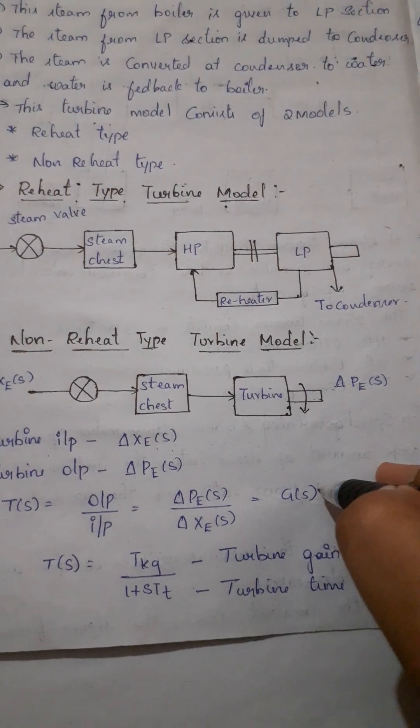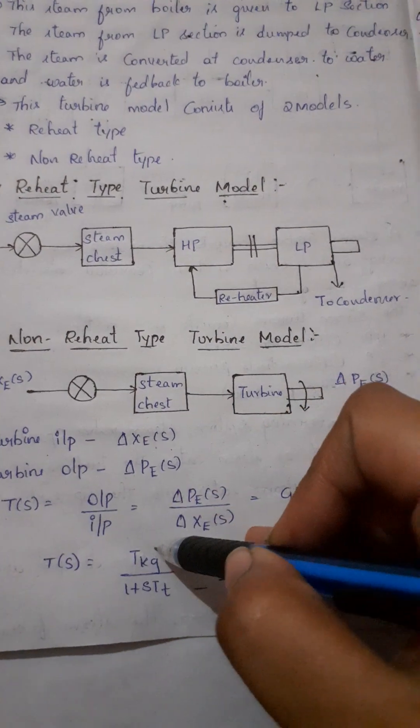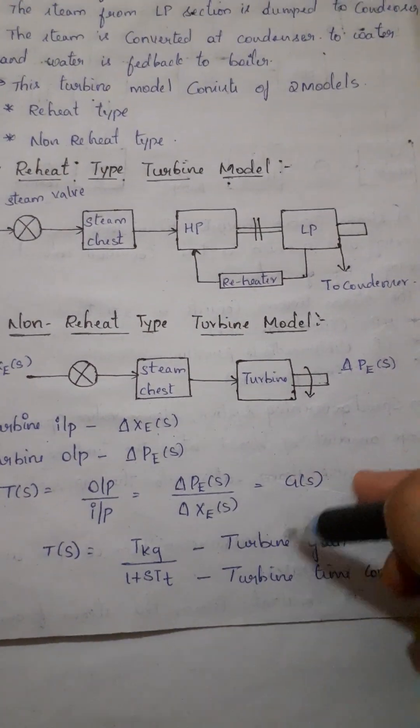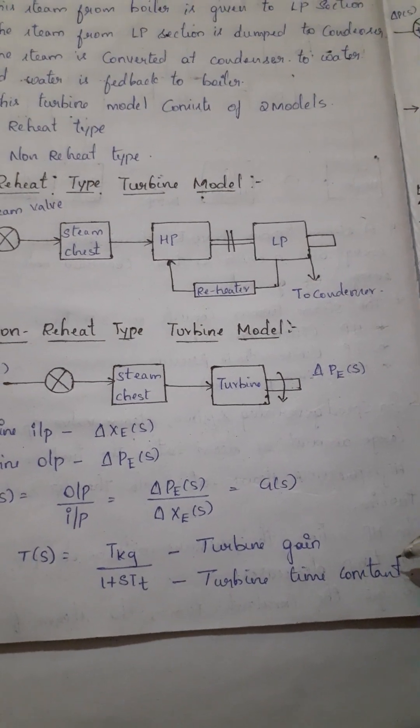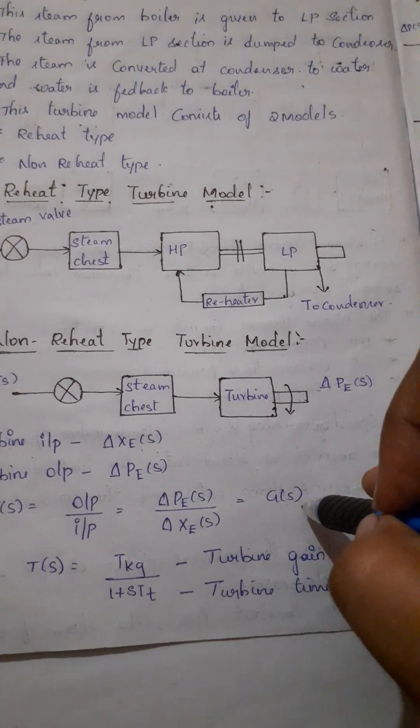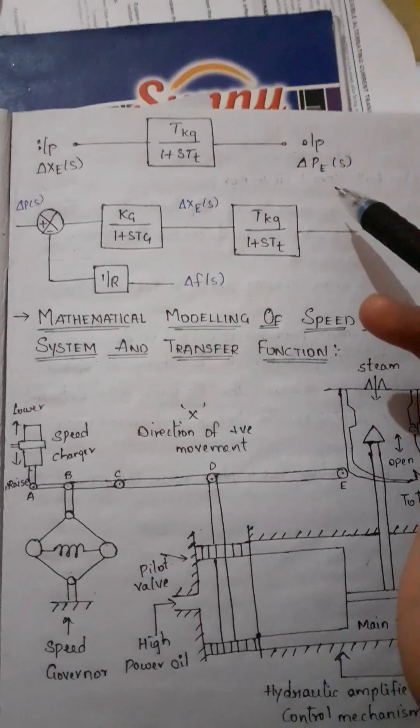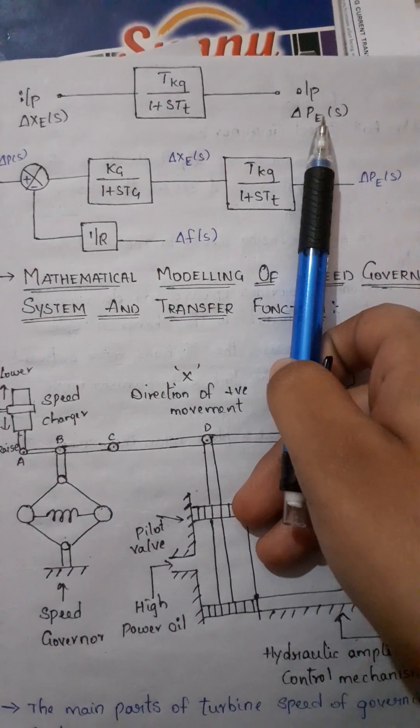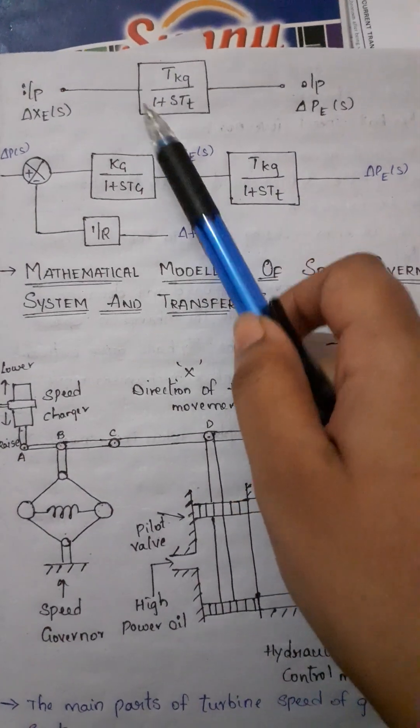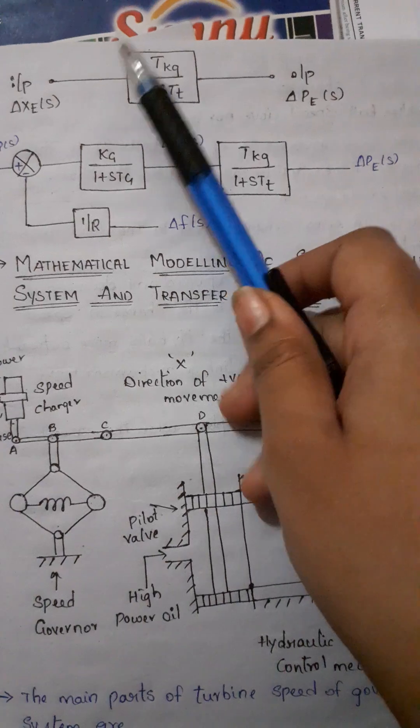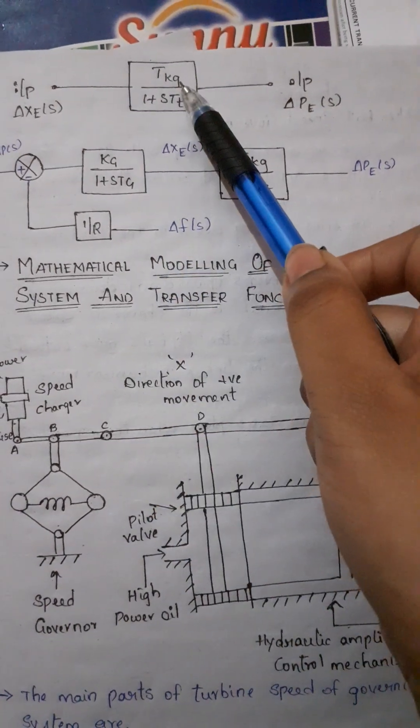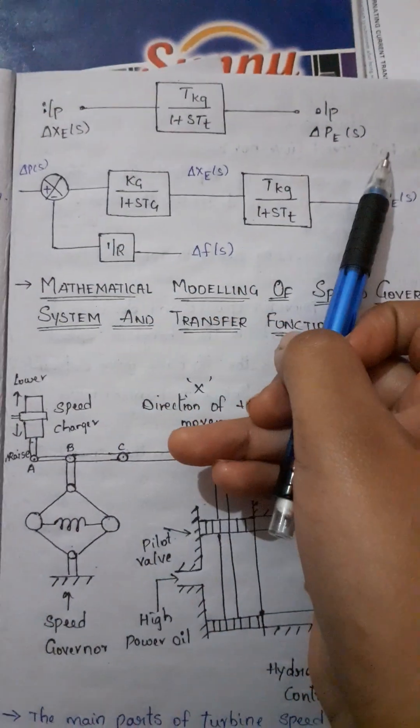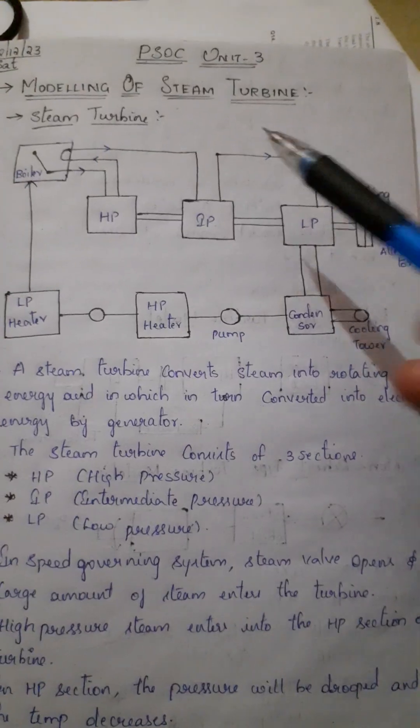The time we have mentioned, T of s is equal to Tkg by 1 plus sT tau. This will be the turbine gain and this will be the turbine time constant. This is the input delta xe of s and output delta pe of s.